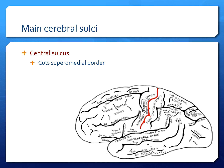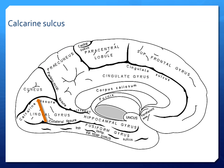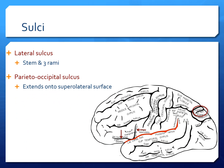Main cerebral sulci. The first one is the central sulcus, which is shown with the red color here. As you can see it cuts the superomedial border. Along the medial surface there is a calcarine sulcus which is marked with an arrow here. There is a sulcus which is called as lateral sulcus, shown with the red color here.